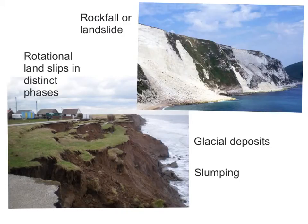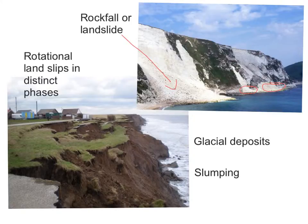Starting with these two photos: the top photo shows a rockfall or landslide, which has probably been caused by some sort of undercutting at the base, making the top half of the cliff destabilise and collapse very quickly. This is a very fast mass movement.